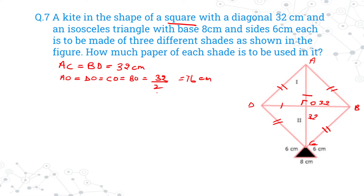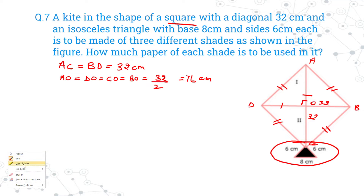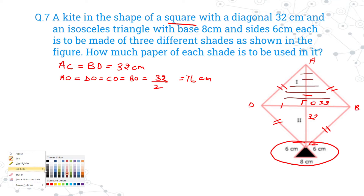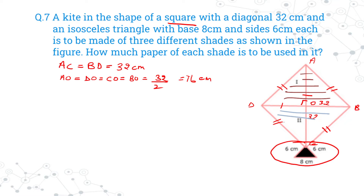Now, there is an isosceles triangle with base 8 cm and sides 6 cm each, which is to be made of three different shades as shown in the figure. So we are using three different types of paper — for example, brown paper for the first triangle, blue for the second triangle, and black for the third triangle.